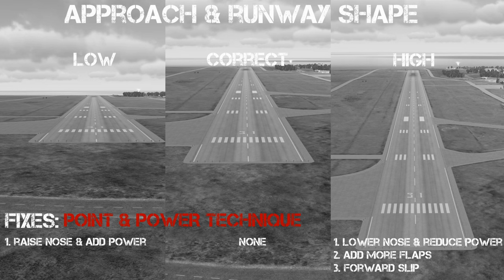As you can see, if you're low then the runway looks short and fat, but if you're high the runway looks long and skinny. By making the proper adjustments you make the runway look like the middle picture. Another option if you are high is the forward slip.